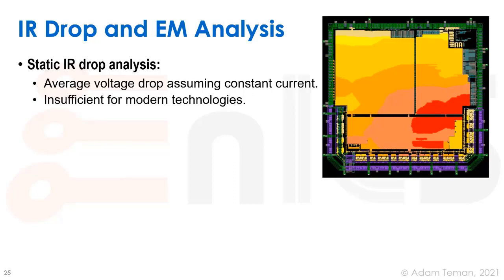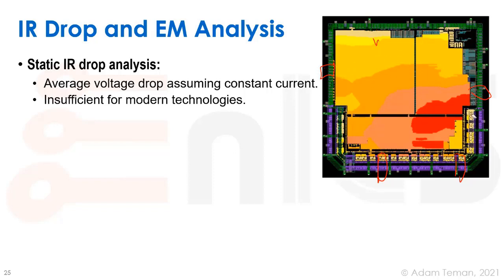Static IR drop analysis says: we have standard cells distributed all over the chip, and each standard cell has some constant average current it dissipates. We know where the different pads are providing power or ground, and we know what the power grid bringing them to every area of the chip is. So we can figure out the resistance from the power rails into each and every one of our transistors or gates.